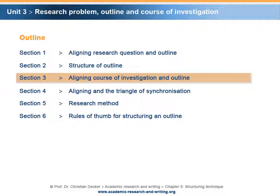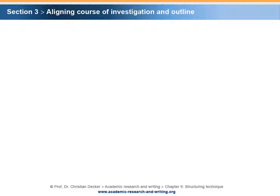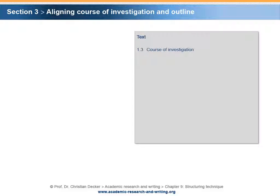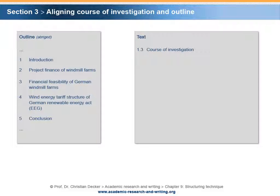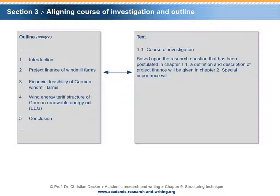Section 3 – Aligning Course of Investigation and Outline. Accordingly, there is a relation between the subchapter course of investigation and the outline. The subchapter course of investigation describes how one wants to derive an answer to the research question. It simply refers to the sequence of the chapters, not the method. It is linked to the outline. The first paragraph of the course of investigation refers to the research question and leads directly on to a brief description of Chapter 2. The second paragraph of the course of investigation briefly describes Chapter 3, and so on.